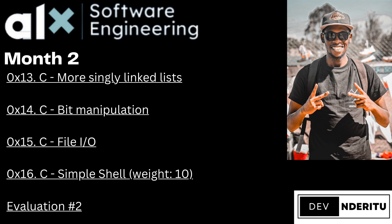Month 2 doesn't have a lot of mini projects, but the simple shell is the major one that takes the majority of your time — about two weeks. In the first two weeks you'll do singly linked lists, an extension of singly linked lists, bit manipulation, and file I/O.